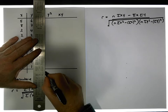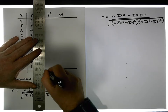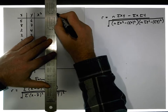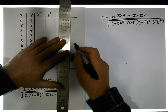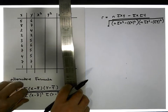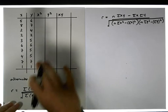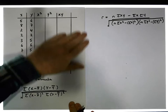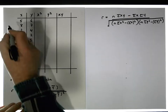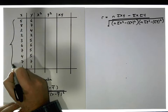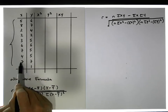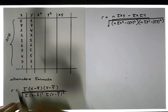Let me make this a little bit neater so we're not overcrowding everything. We need to fill in all of these values. Keep in mind that n is the number of paired observations. In this case I have one, two, three, four, five, six, seven, eight, nine, ten — n is equal to ten observations.